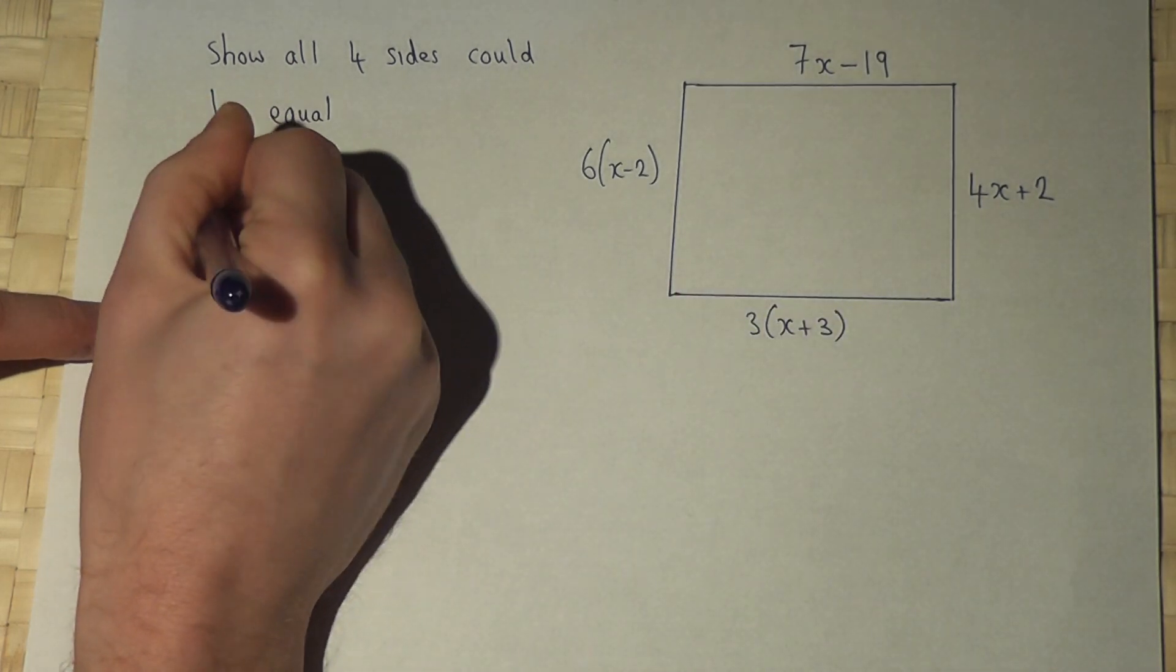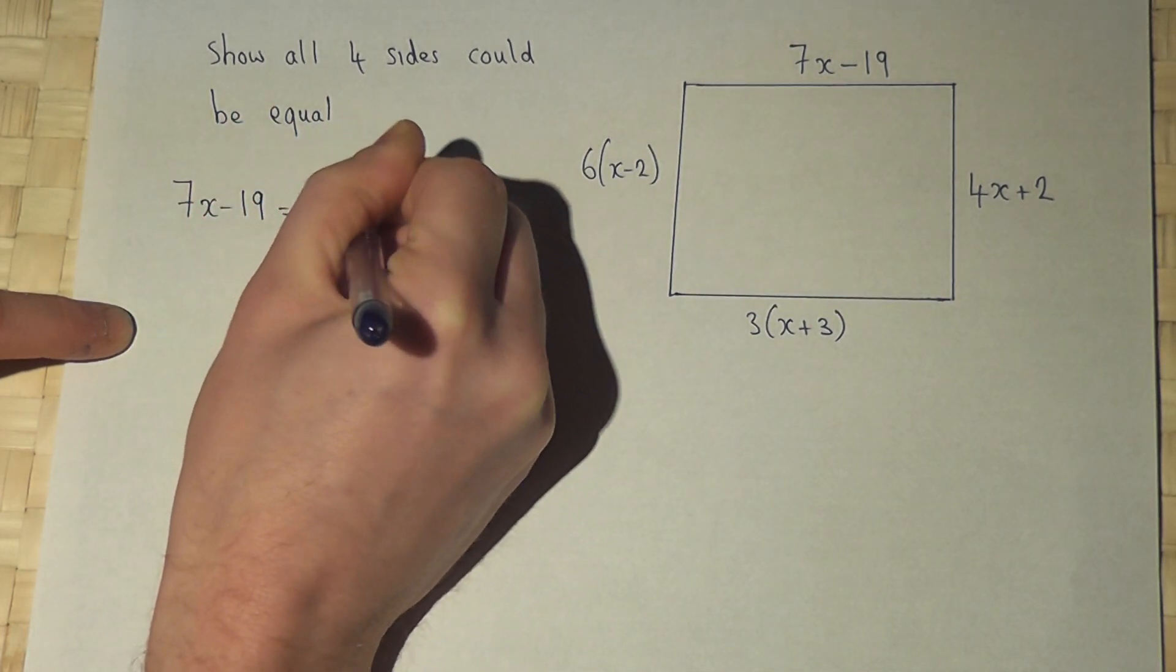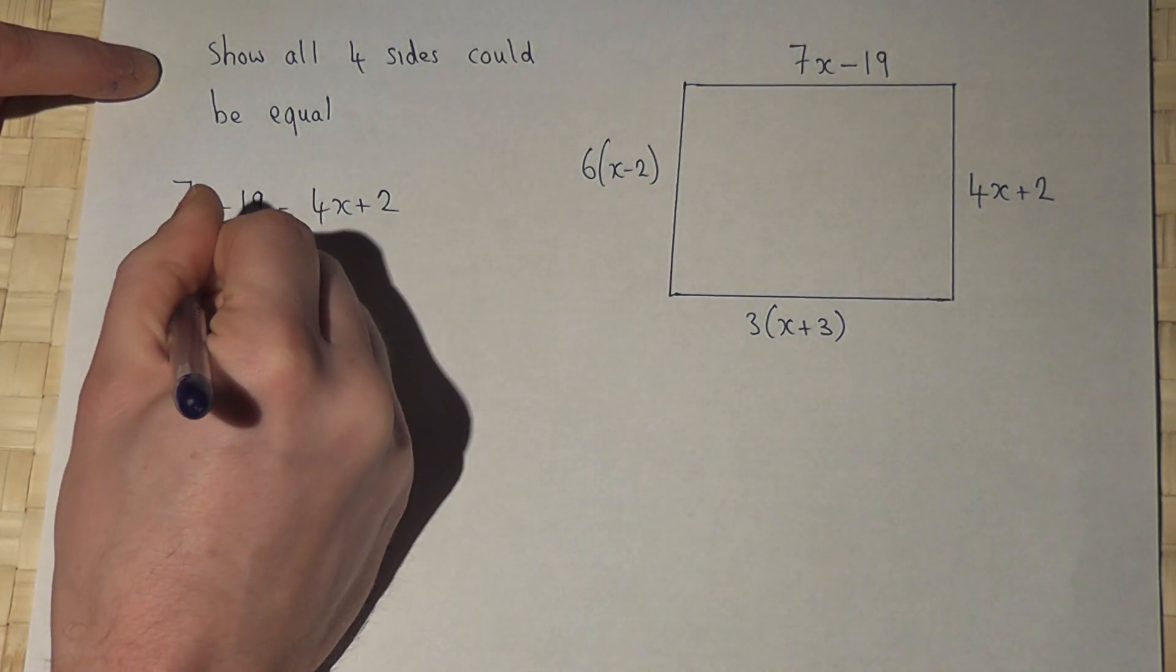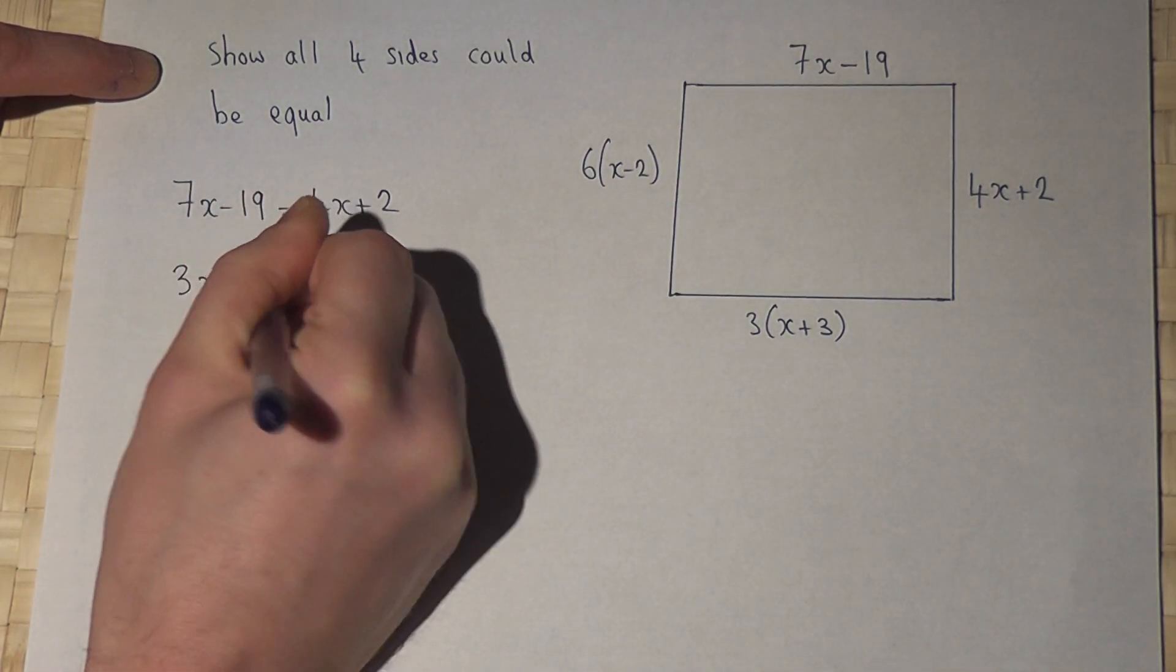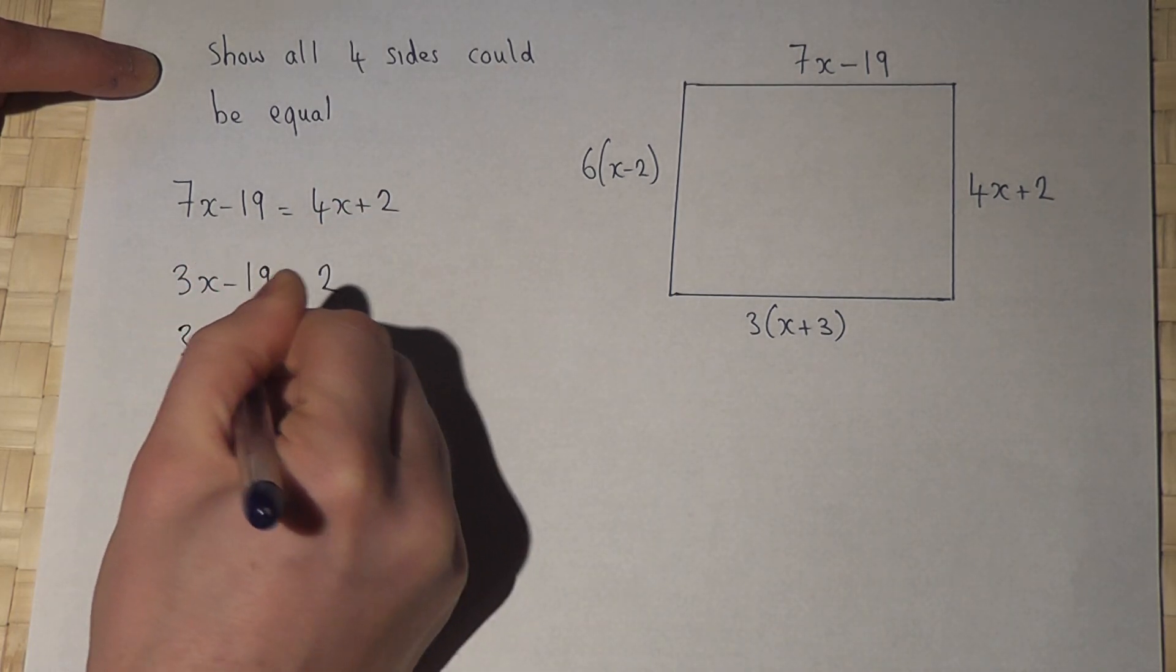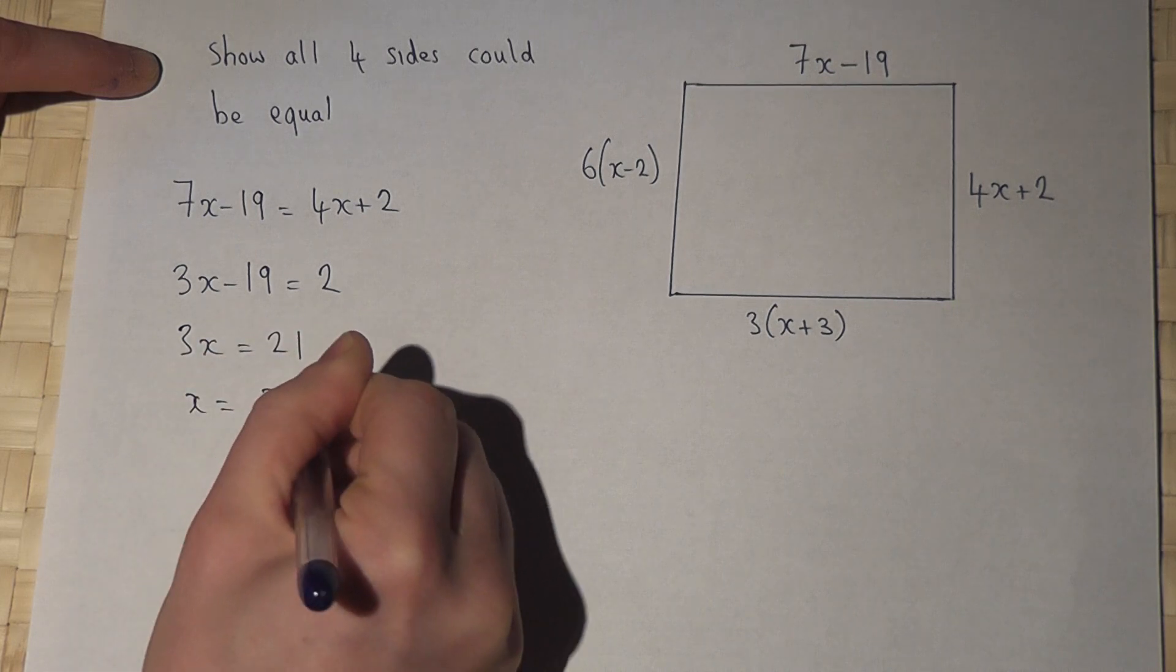So if I try to solve where the top side is the same as the right-hand side, then take away 4x, I get 3x. Take 19 equals 2. If I add the 19, I get 21. So when x equals 21 over 3, which is 7, then these two sides are the same.